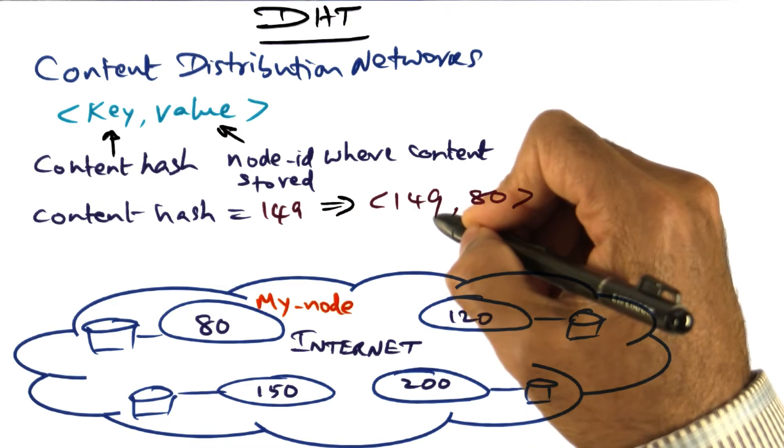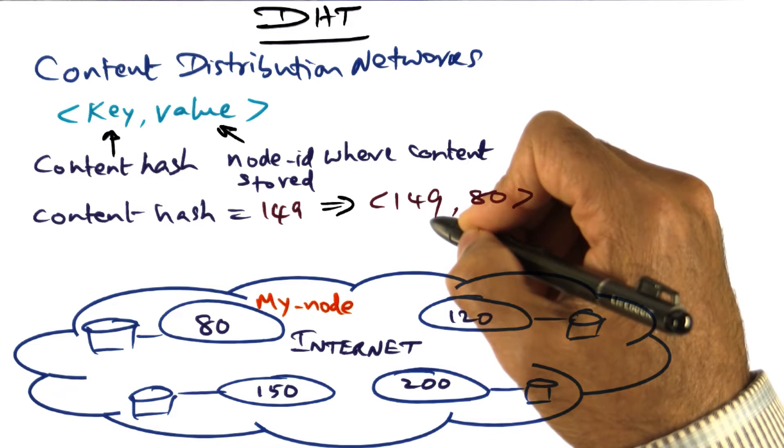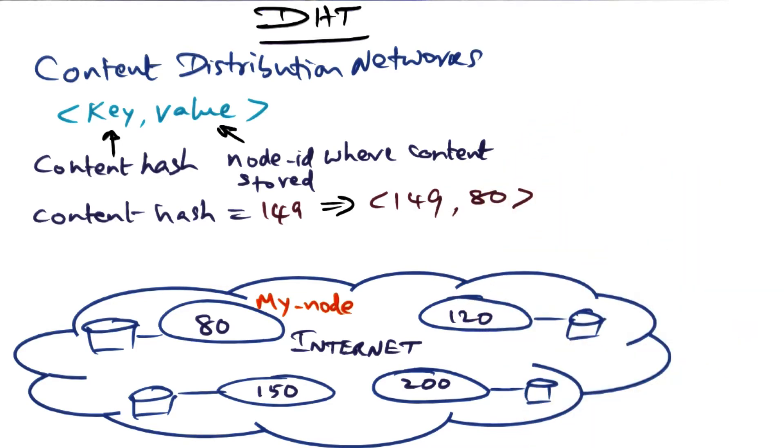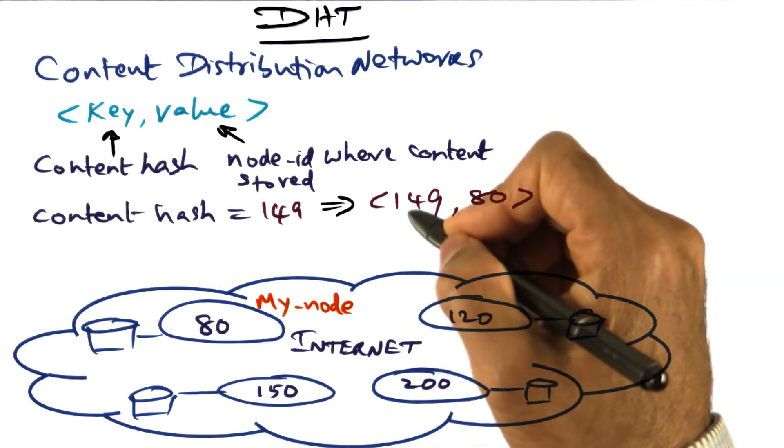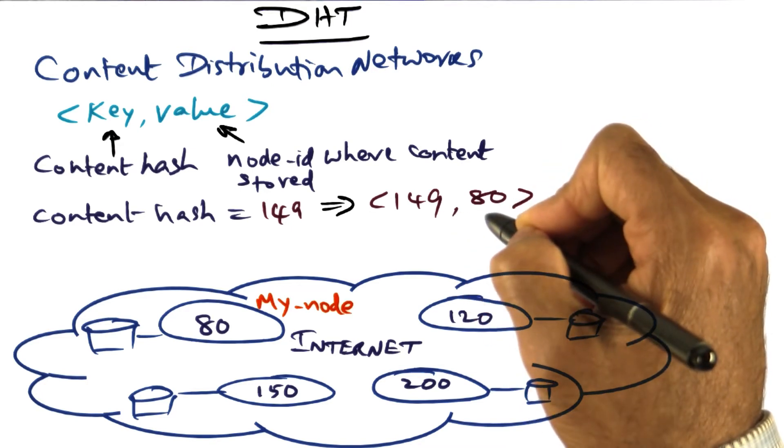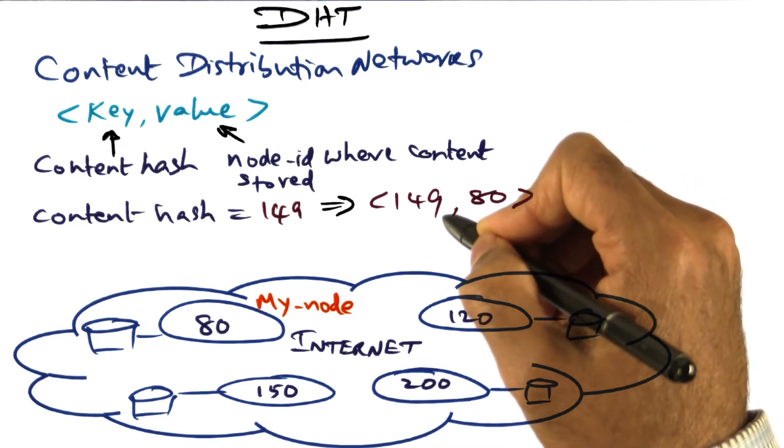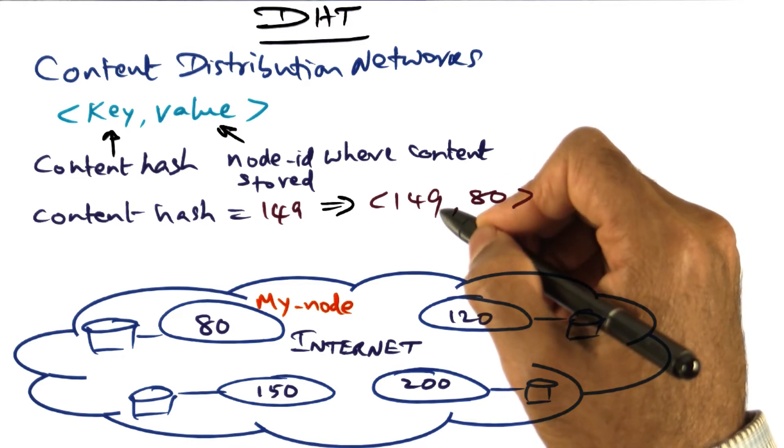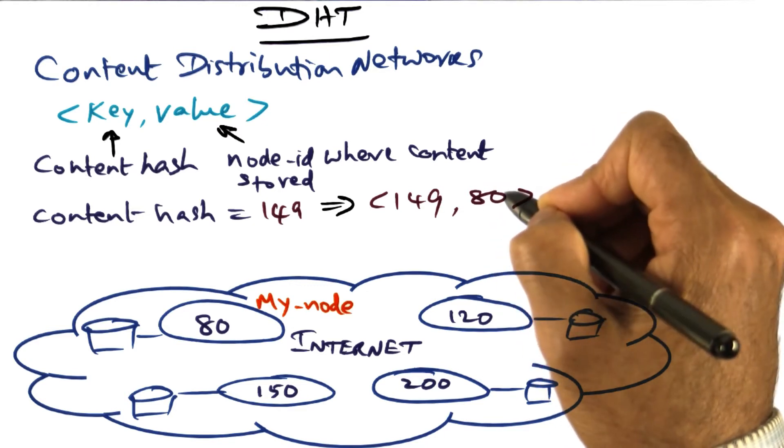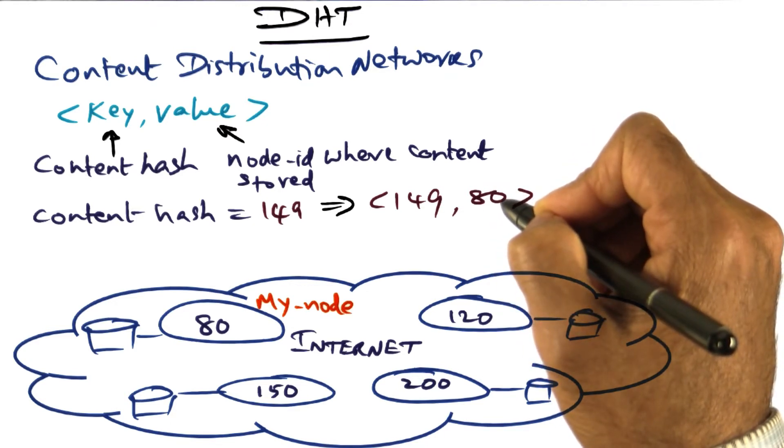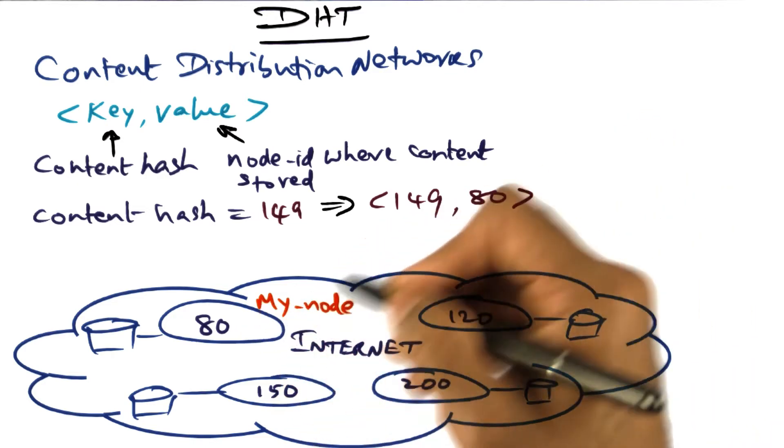In other words, the key 149 is a unique name that I've generated for the content which I want to distribute to others that may be interested in looking at this content. Now if you get this key value pair 149, 80, you know that 149 is the key that uniquely names my video Kishore's India trip, and 80 is the value which says where you can get this video from. So you can then come to my node and get it from me.